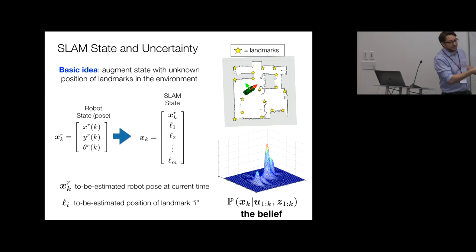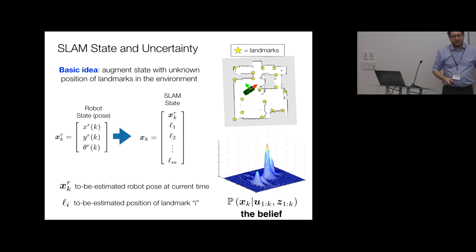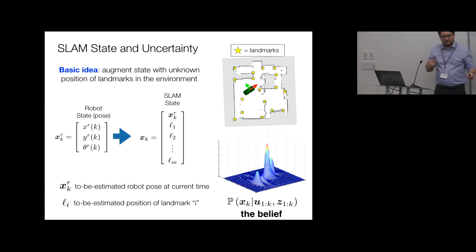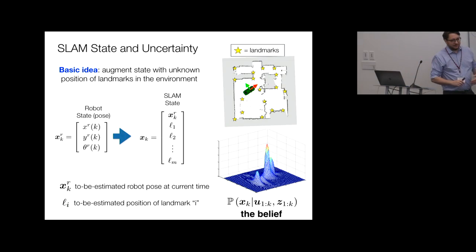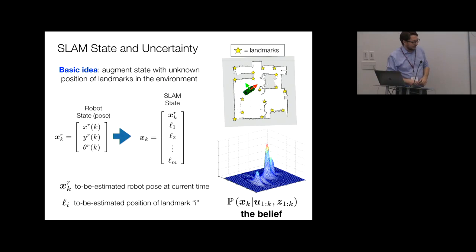Formally, we want to compute the belief: P(SLAM_state | u_{1:k}, z_{1:k}), where u is all proprioceptive measurements from time 1 to k and z is all exteroceptive measurements. This probability distribution is defined over a large state space — a 2M+3 dimensional space in 2D — and this is called the belief.